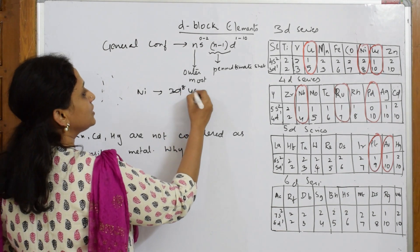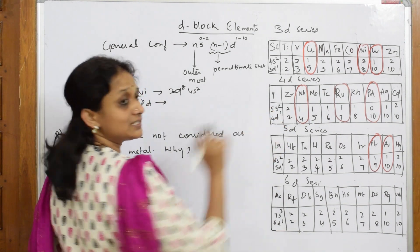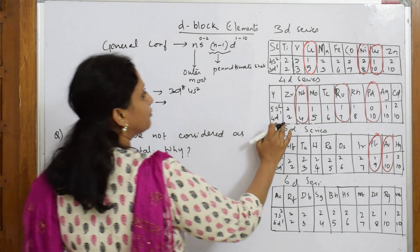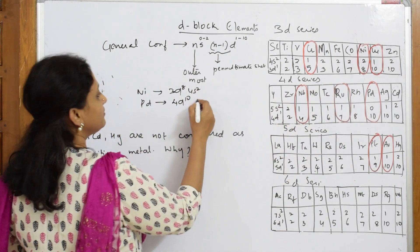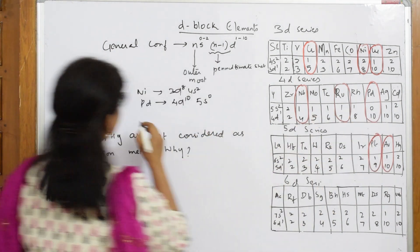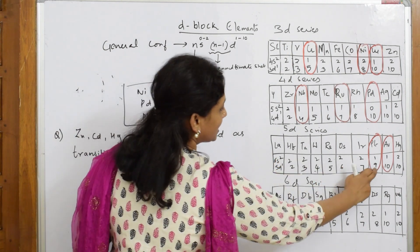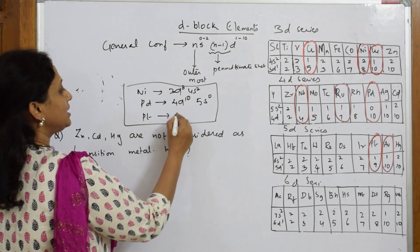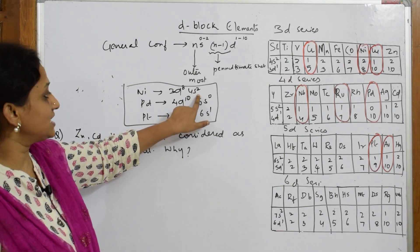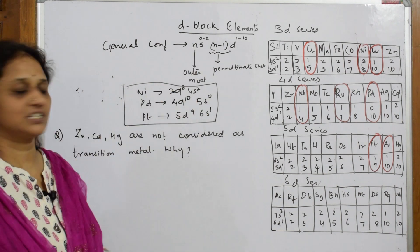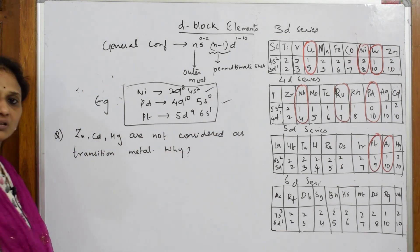Coming down to palladium — palladium's configuration is 4D10 5S0. Then for platinum, the configuration is 5D9 6S1. So you can see that NS starts from 0 (as in palladium with 5S0) and ends at 2 (as in nickel with 4S2). That's why I've written NS as 0 to 2, and D as usual fills 1 to 10 electrons.